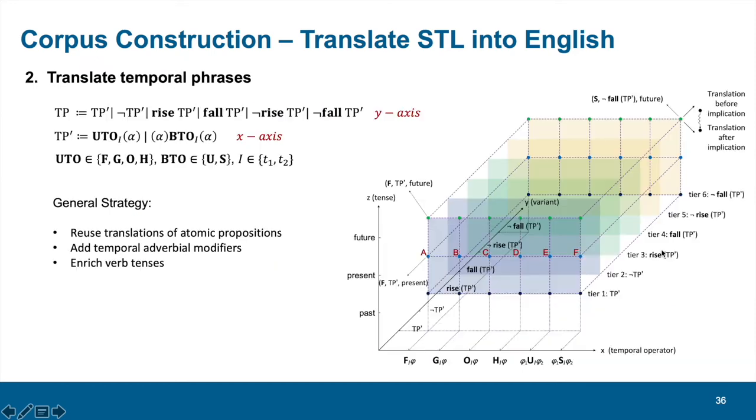After moving up, we need to organize translations for temporal phrases. However, as shown in the red figure, the procedure is much more complicated. For the x-axis, we need to consider different temporal operators. For the y-axis, we need to consider different variants of each temporal operator. For the z-axis, we should consider the English tenses that are suitable to express each temporal operator. Even when we fix one combination of the three aspects, we should also consider the position of the temporal phrase because it is related to the reuse of predicates. But luckily, we can reuse the translation of atomic propositions with the addition of temporal adverbial modifiers and the enrichment of verb tenses.